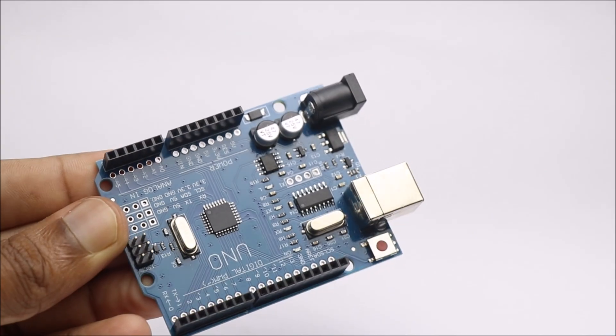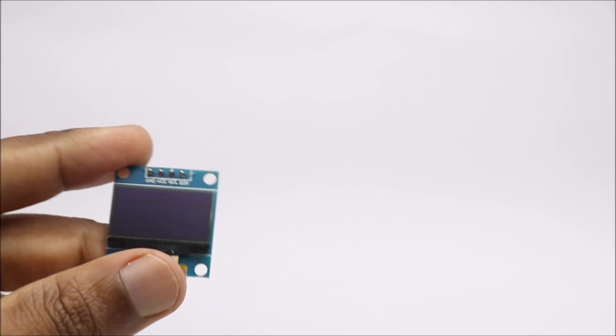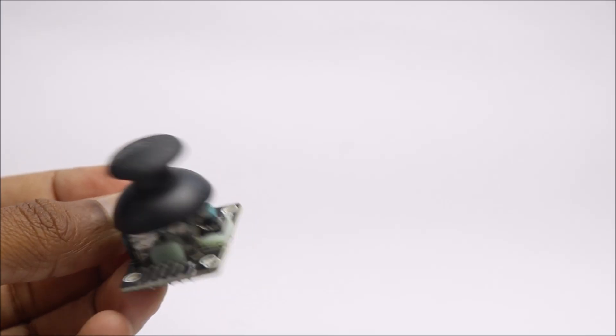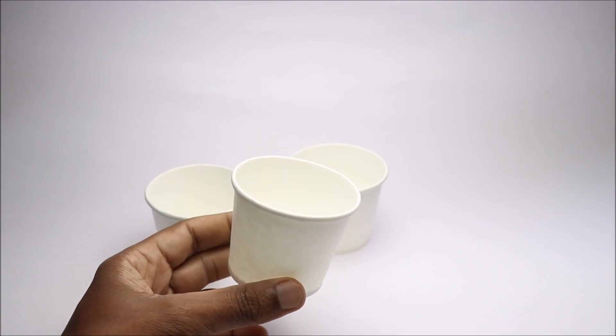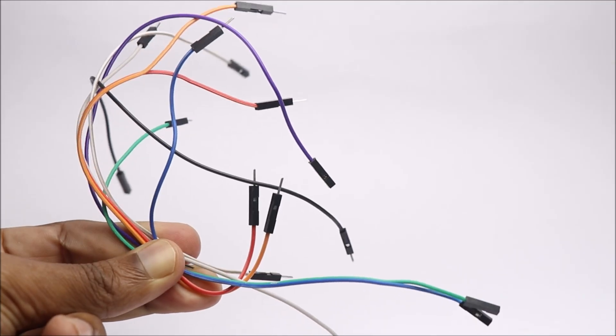To build this project you need Arduino Uno, three micro servos, OLED module, PS2 joystick module, small breadboard, tubes, paper sheet, cardboard, and a few jumper cables.